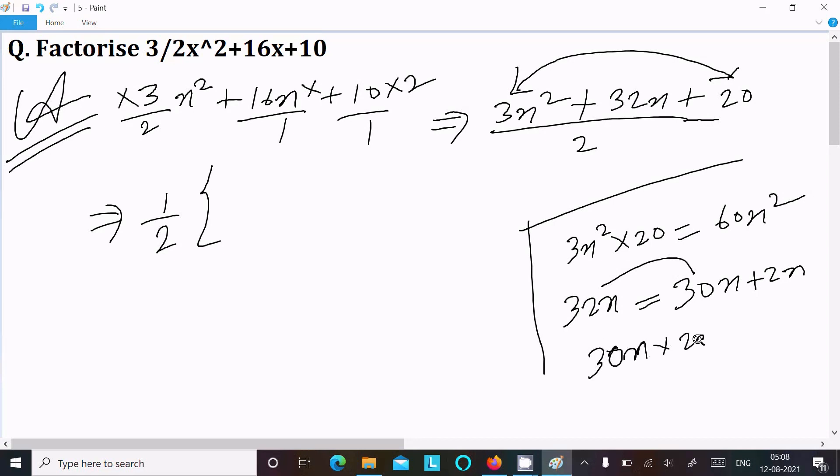So we can write here 3x² in place of 32x, 30x plus 2x plus 20.